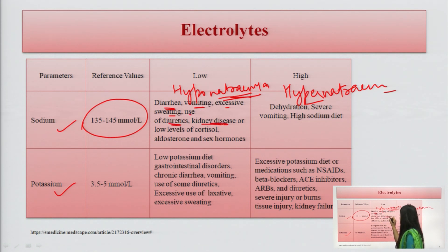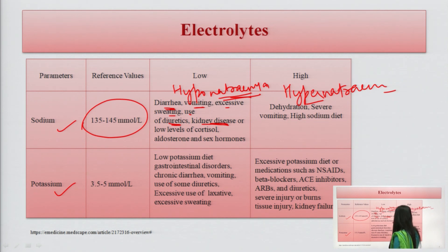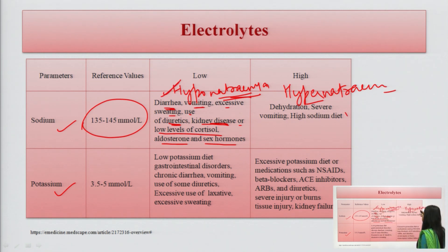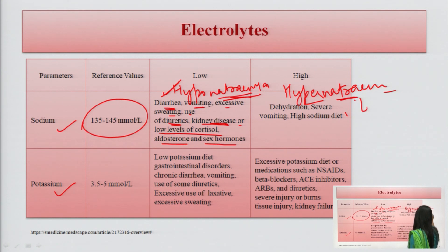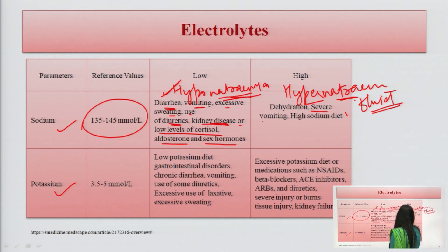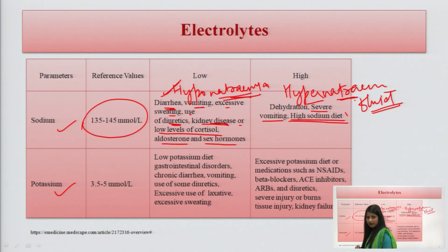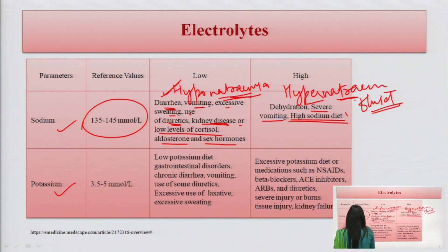Hyponatremia occurs in conditions like diarrhea, fluid loss, vomiting, excessive sweating, use of diuretics, kidney disease where sodium is excreted out, or with altered cortisol and aldosterone levels. For hypernatremia, if there is severe dehydration or very high fluid loss, the concentration of sodium increases in the body. Also, if the patient is taking a very high sodium diet, the sodium level in the blood rises, which is called hypernatremia.